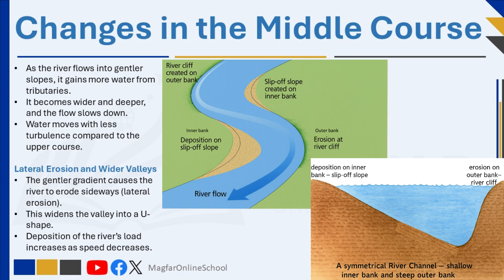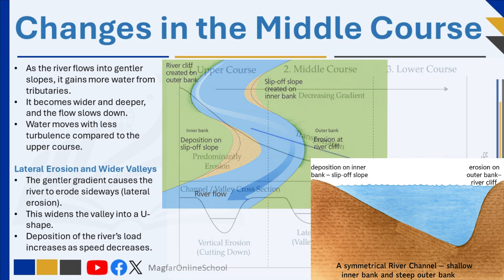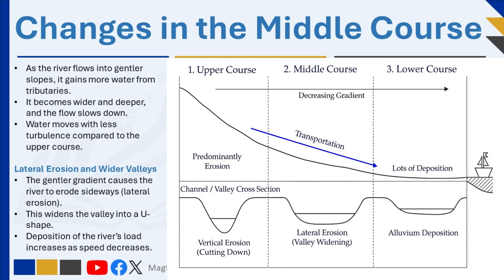In summary, the middle course of a river is where it begins to shape the landscape sideways, creating wider valleys and meanders through lateral erosion. The river loses some of its earlier speed and energy, but continues to play an important role in sculpting the land as it moves closer to its final destination.